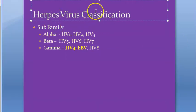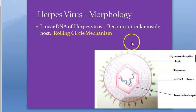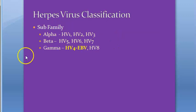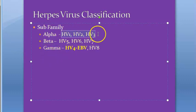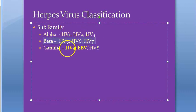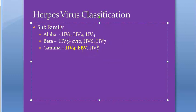Coming to classification: herpes viruses are classified into alpha, beta, and gamma subfamilies. Human herpes virus 1, 2, and 3 are the alpha subfamily. 5, 6, and 7 are beta. 4 and 8 are gamma. So: 4 is Epstein-Barr virus, 8 is Kaposi sarcoma associated herpes virus, 5 is cytomegalovirus, 6 and 7 are not important.